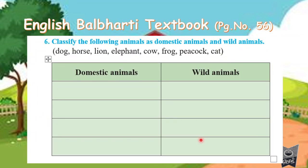The next exercise on page number 56 is to classify the following animals into domestic animals and wild animals. We have already learned this in EVS. Domestic animals are the ones which we can keep in the house — we keep them at home. Wild animals are those which live in the jungle, which we cannot keep at home. These are the names of the animals given, and we need to classify them.